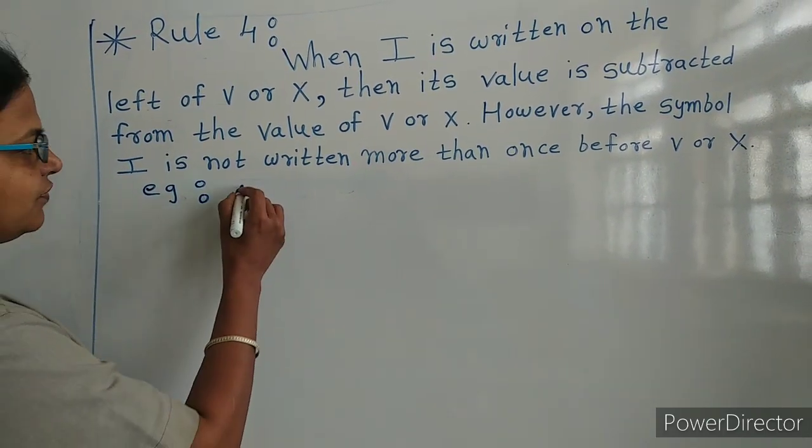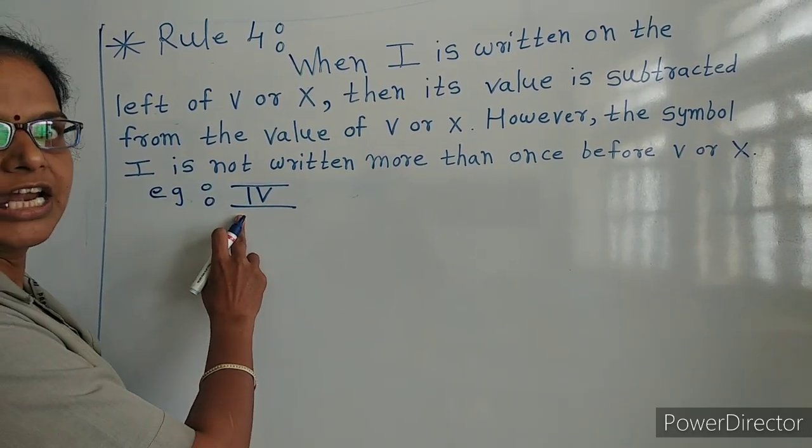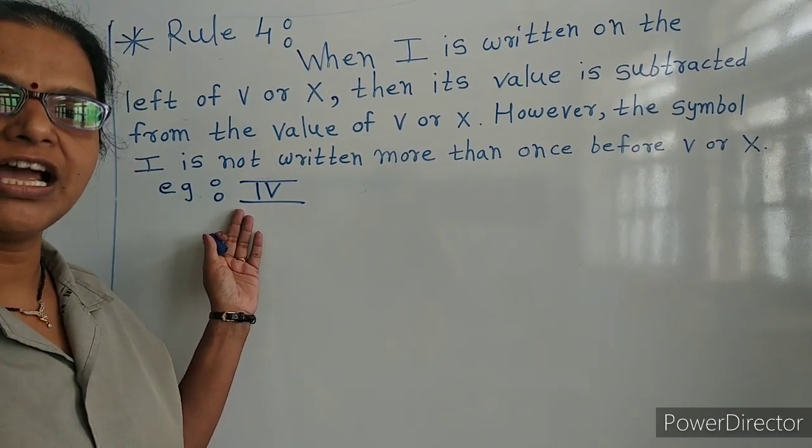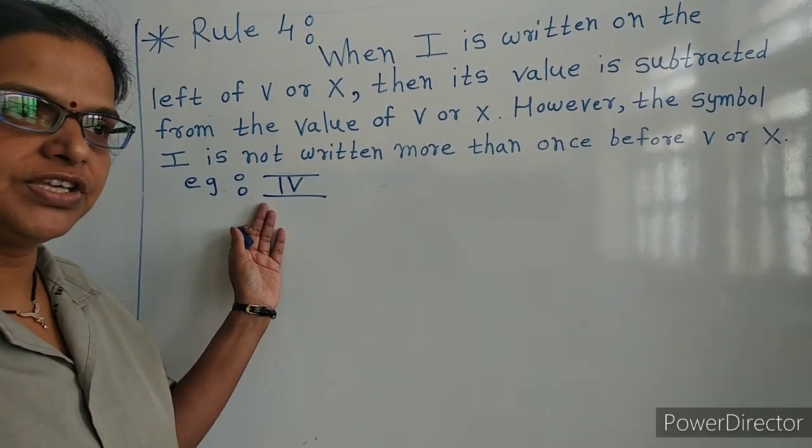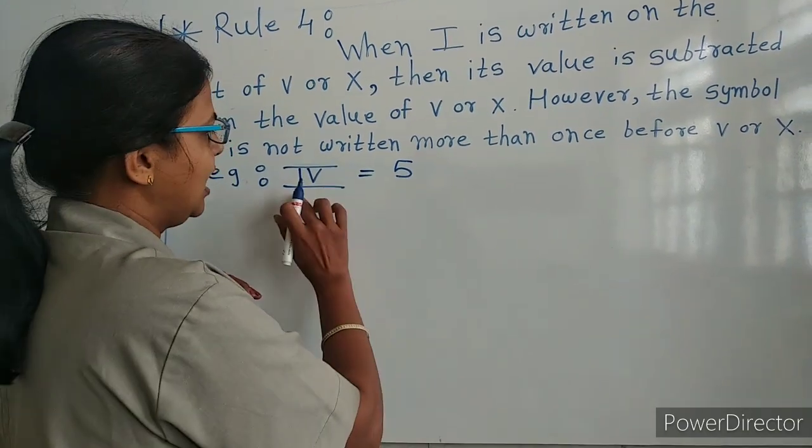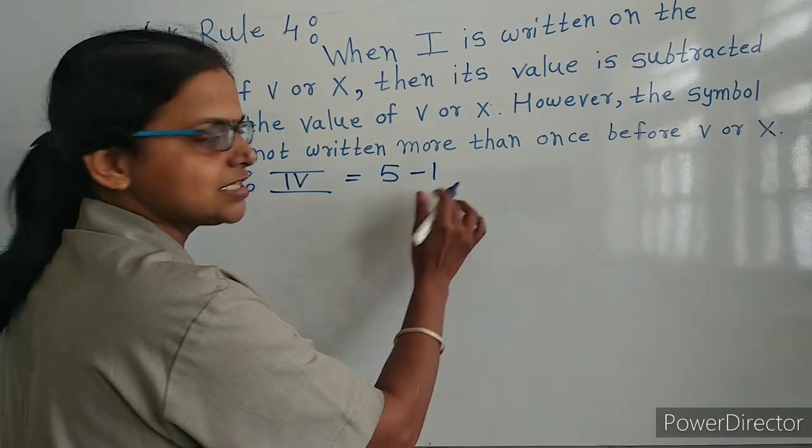IV: I is written left of V, so we have to subtract I's value from V. V's value is 5 and I's value is 1, so 5 minus 1 is 4.